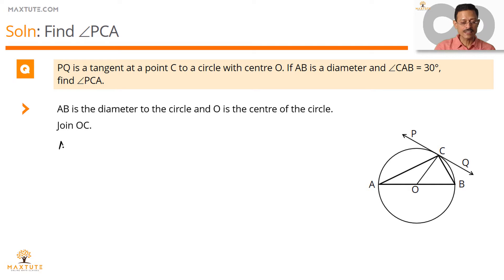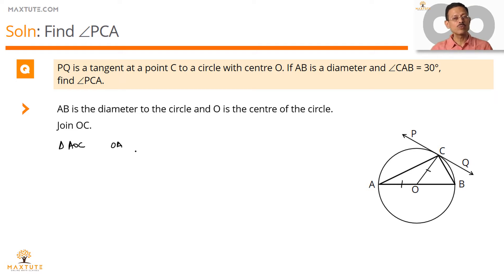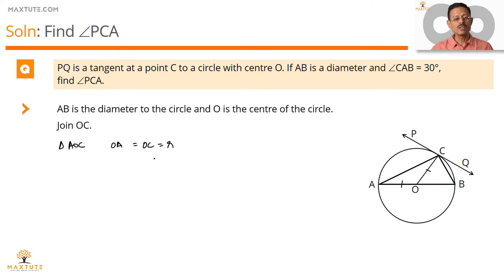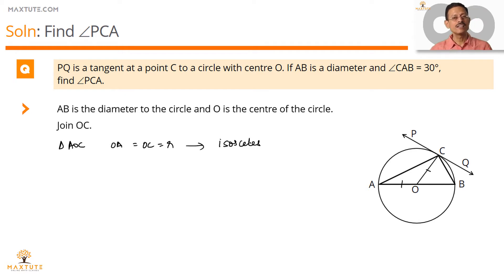Let's look at triangle AOC. In triangle AOC, one side is OA and the other is OC. OA and OC are both radii of the circle, which means they measure the same. So triangle AOC is an isosceles triangle — one in which two sides are equal and correspondingly two opposite angles are equal. The angle opposite OC is angle CAO, and the angle opposite OA is angle ACO. So these two angles are equal.